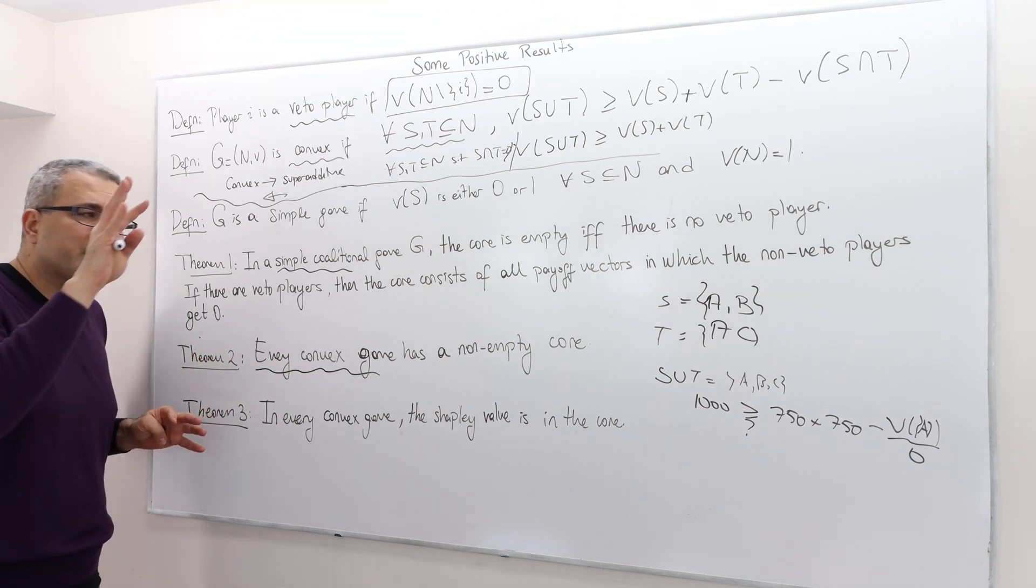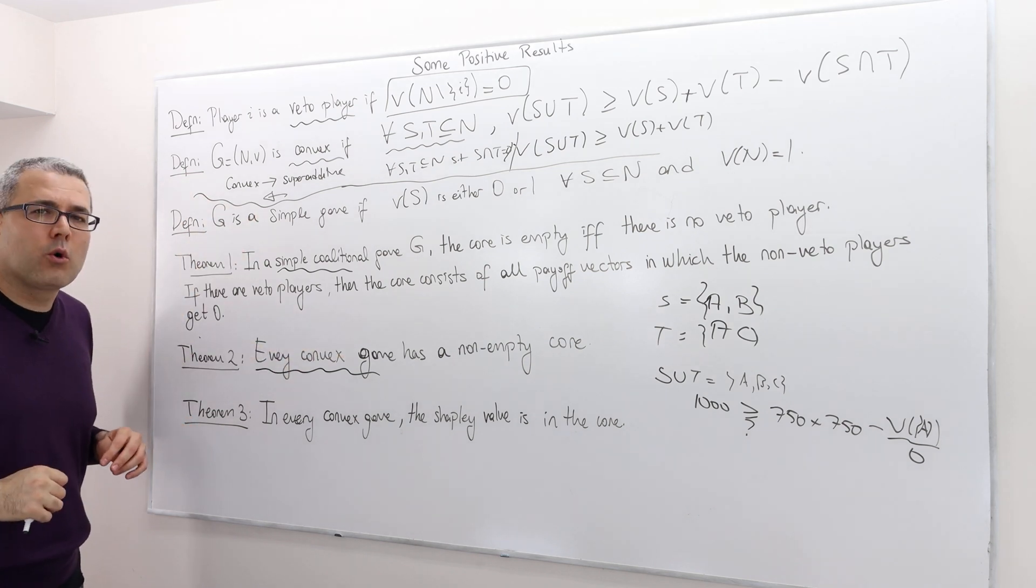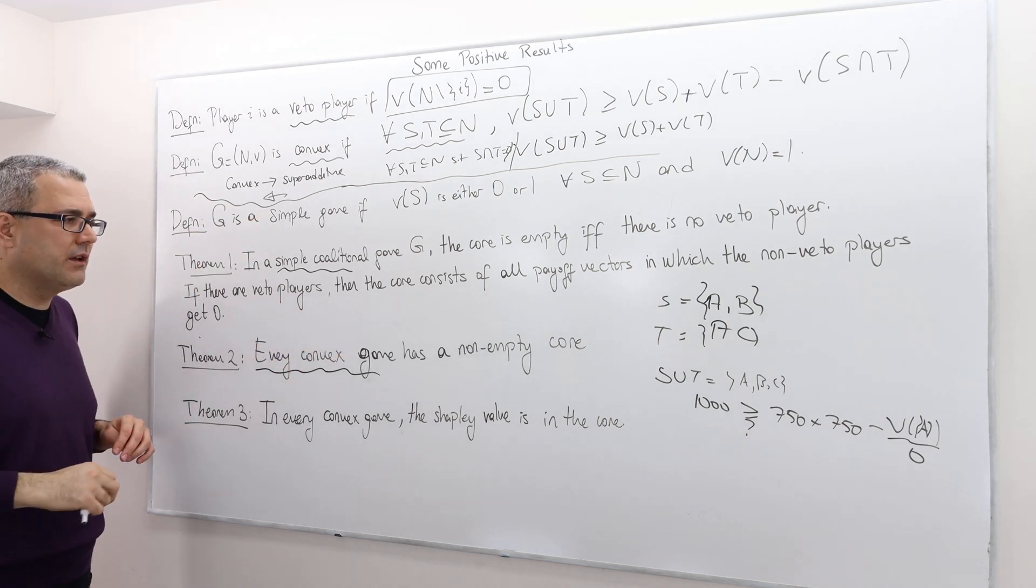So if your game is a convex game, just verify this first. Well, then don't worry. There's at least one core, sort of a payoff vector in the core. Okay.